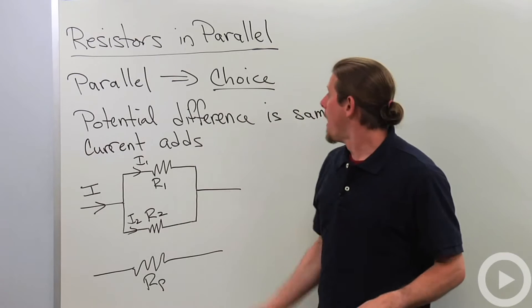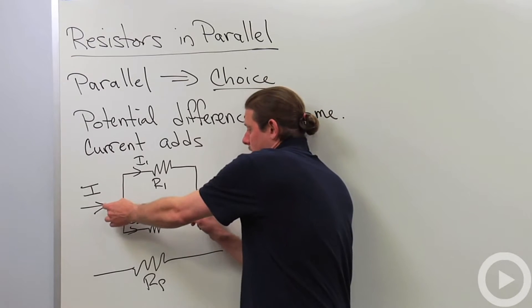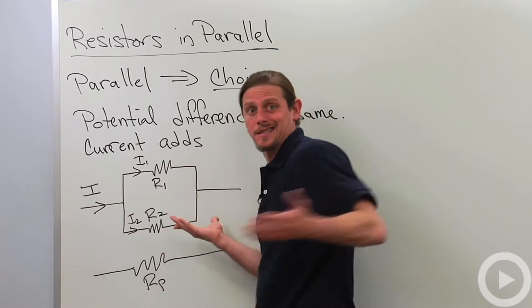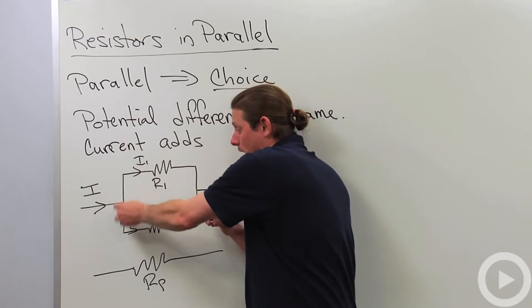So in parallel, potential difference is the same. So the potential difference between these two points is the same because they're the same two points.